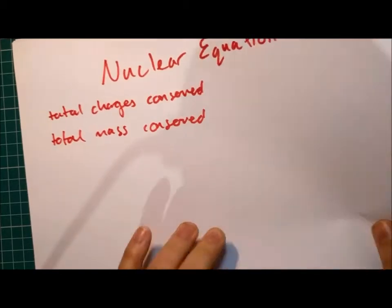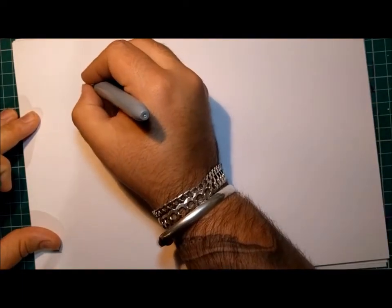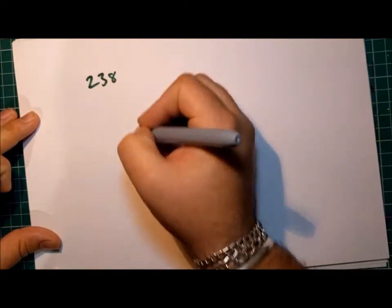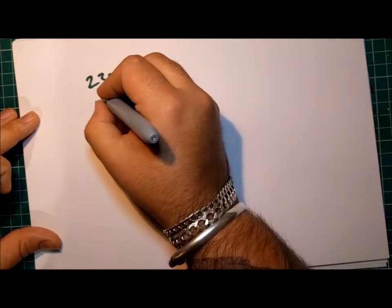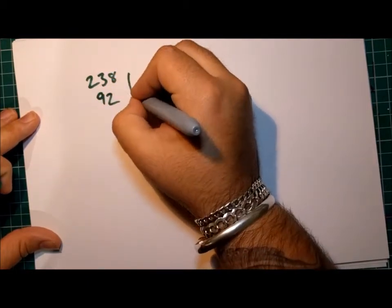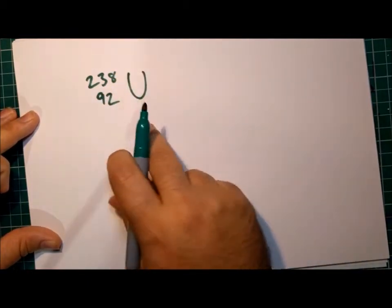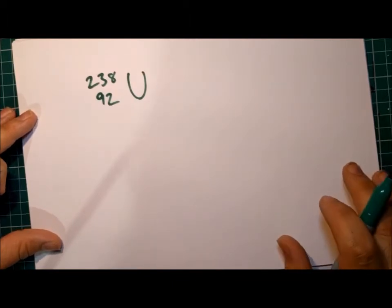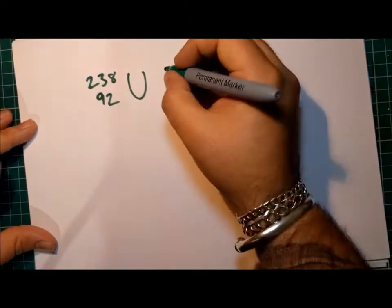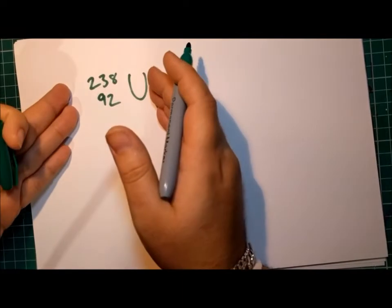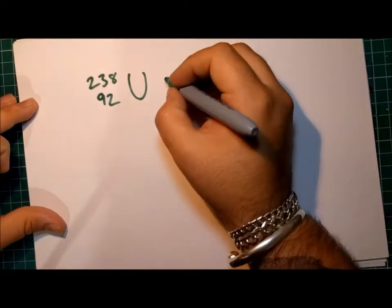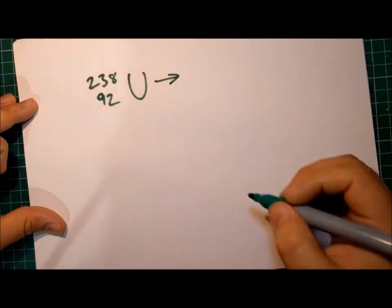So let's start with alpha emission. So this is the event of an alpha particle being given off from a nucleus as it decays. So if we started with something like, something with a mass of 238 and an atomic number of 92, which is uranium. Then we would write what was there before, which is a nucleus of uranium. Then we put an arrow in.